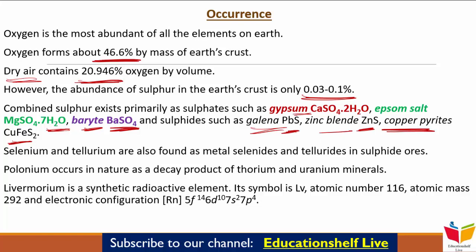Selenium और Tellurium भी हैं, they are also found as Metal Selenides and Tellurides in Sulfide Ores। Polonium जो है, वो nature में decay product की तरह मिलता है हमें Thorium और Uranium Minerals का।